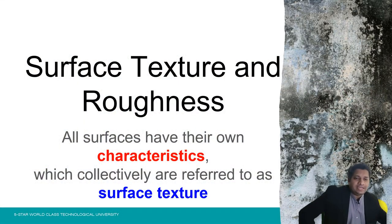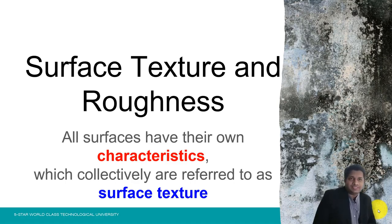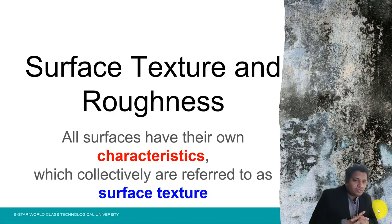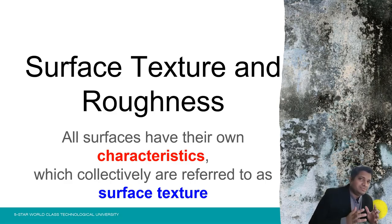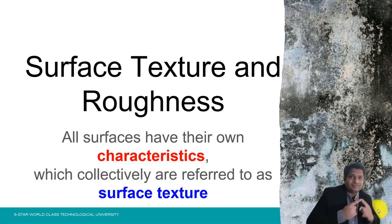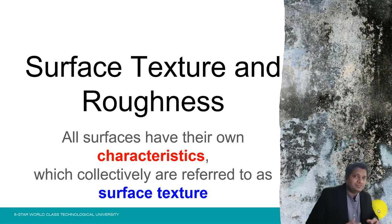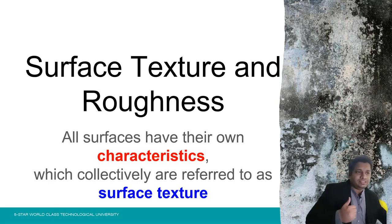We are going to start the next topic which is surface texturing and roughness. All surfaces have their own textures and their own roughness, so it is basically distinct to each surface. When we talk about the production of different types of surfaces, surface texture means that every single surface is going to have its own characteristics such as roughness, waviness, lay, flaws, etc. Although the description of surface texture is quite complex, we will characterize it based on four things.